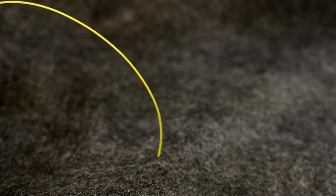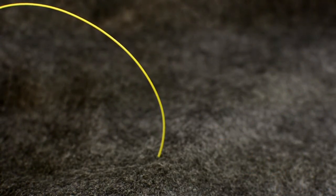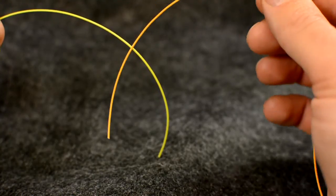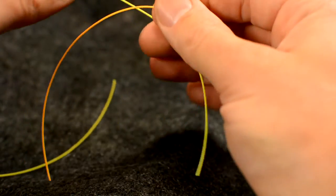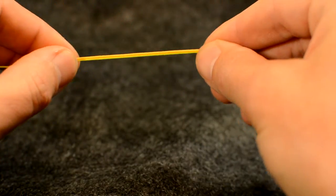Have the tippet or yellow line in your left hand and the leader or orange line in your right. Overlap these two with enough material to complete the knot.